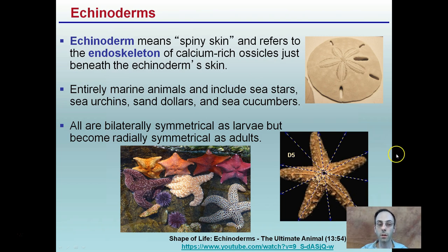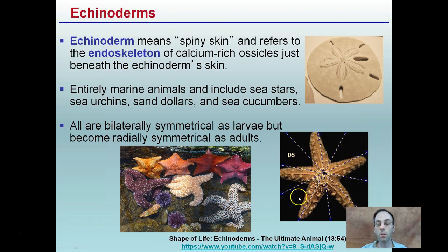An interesting fact is that they are bilaterally symmetrical as larvae, but become radially symmetrical as adults. Radial symmetry means that anywhere through the midpoint that you draw a plane, they are symmetrical.